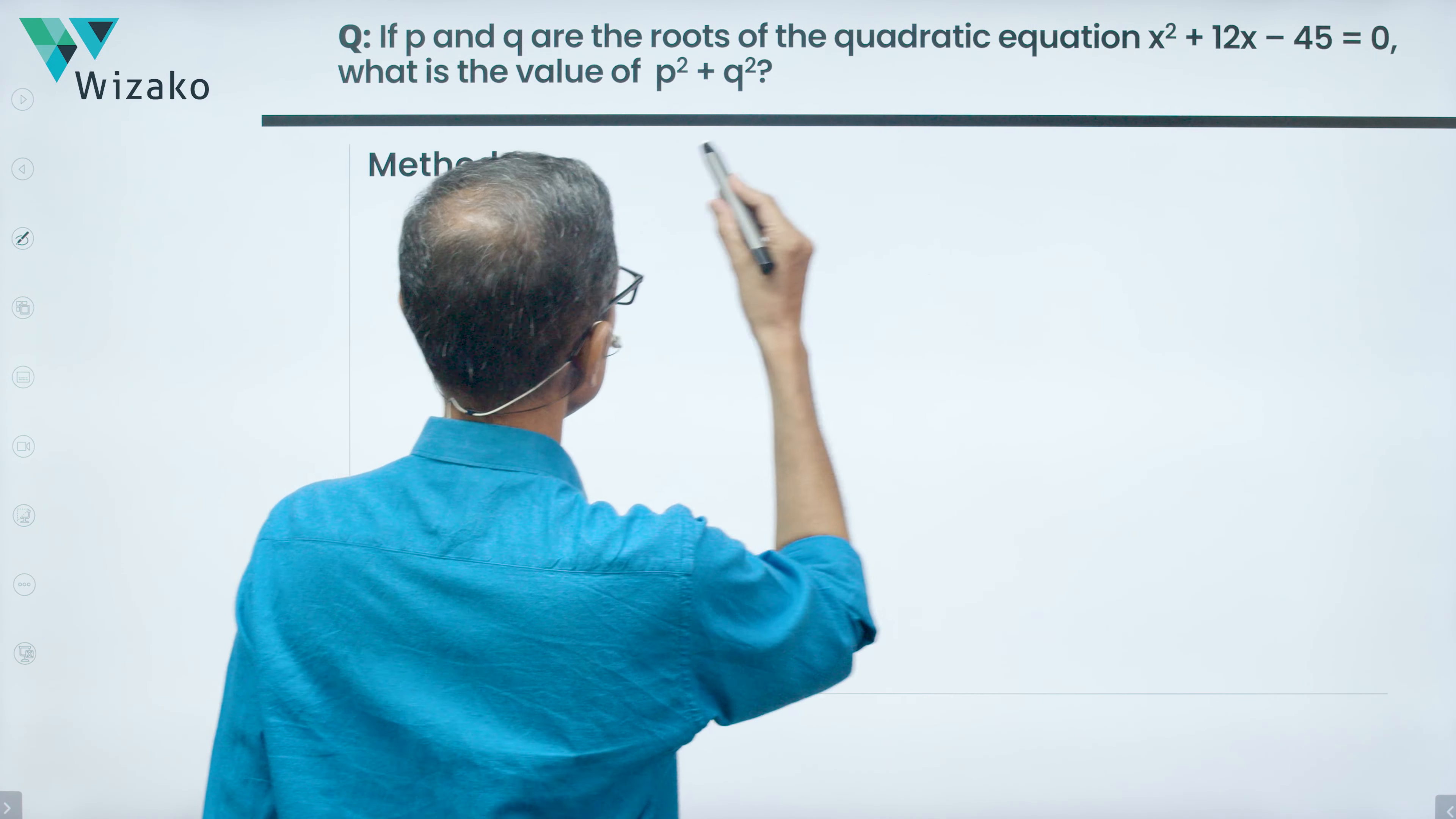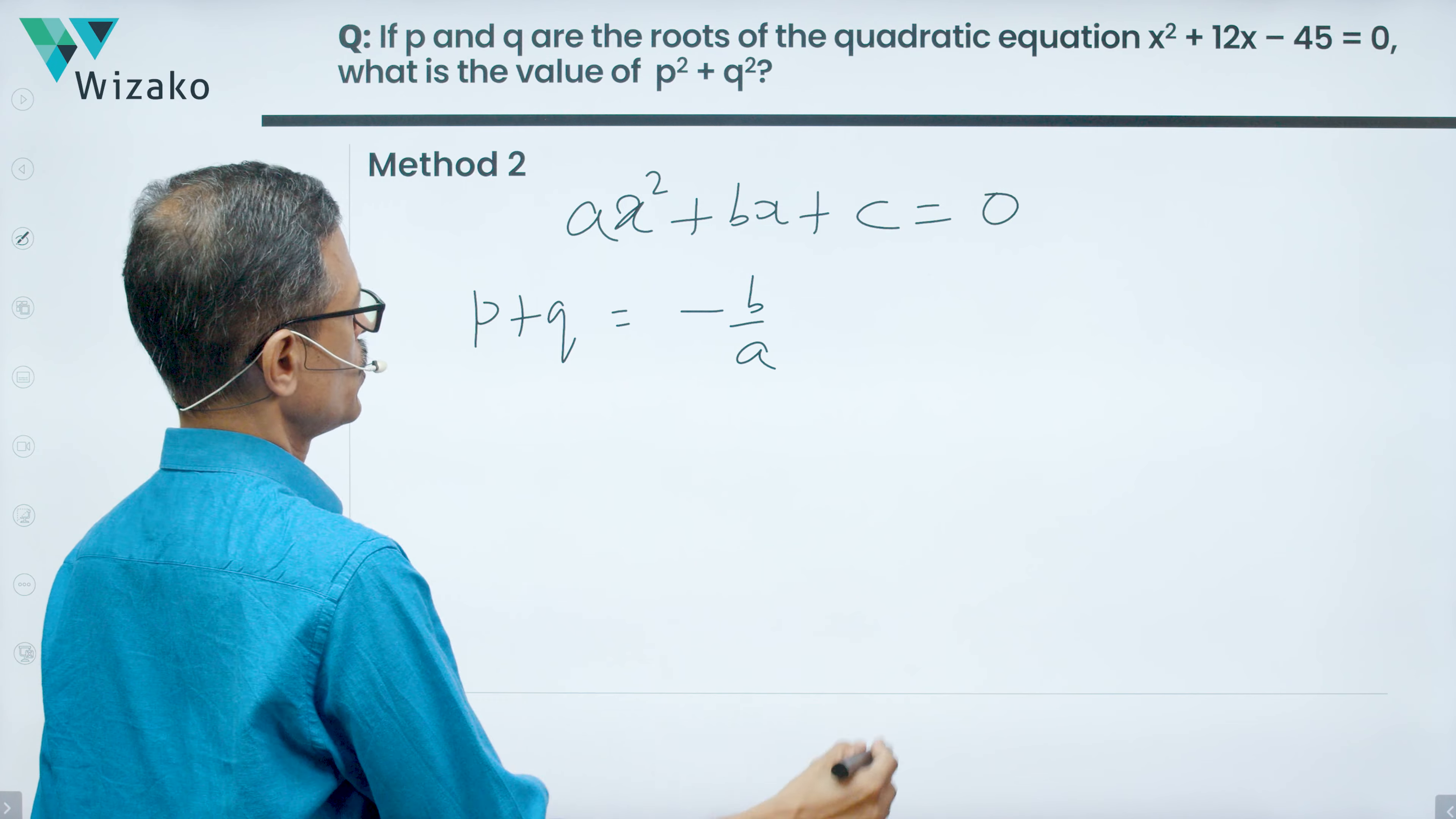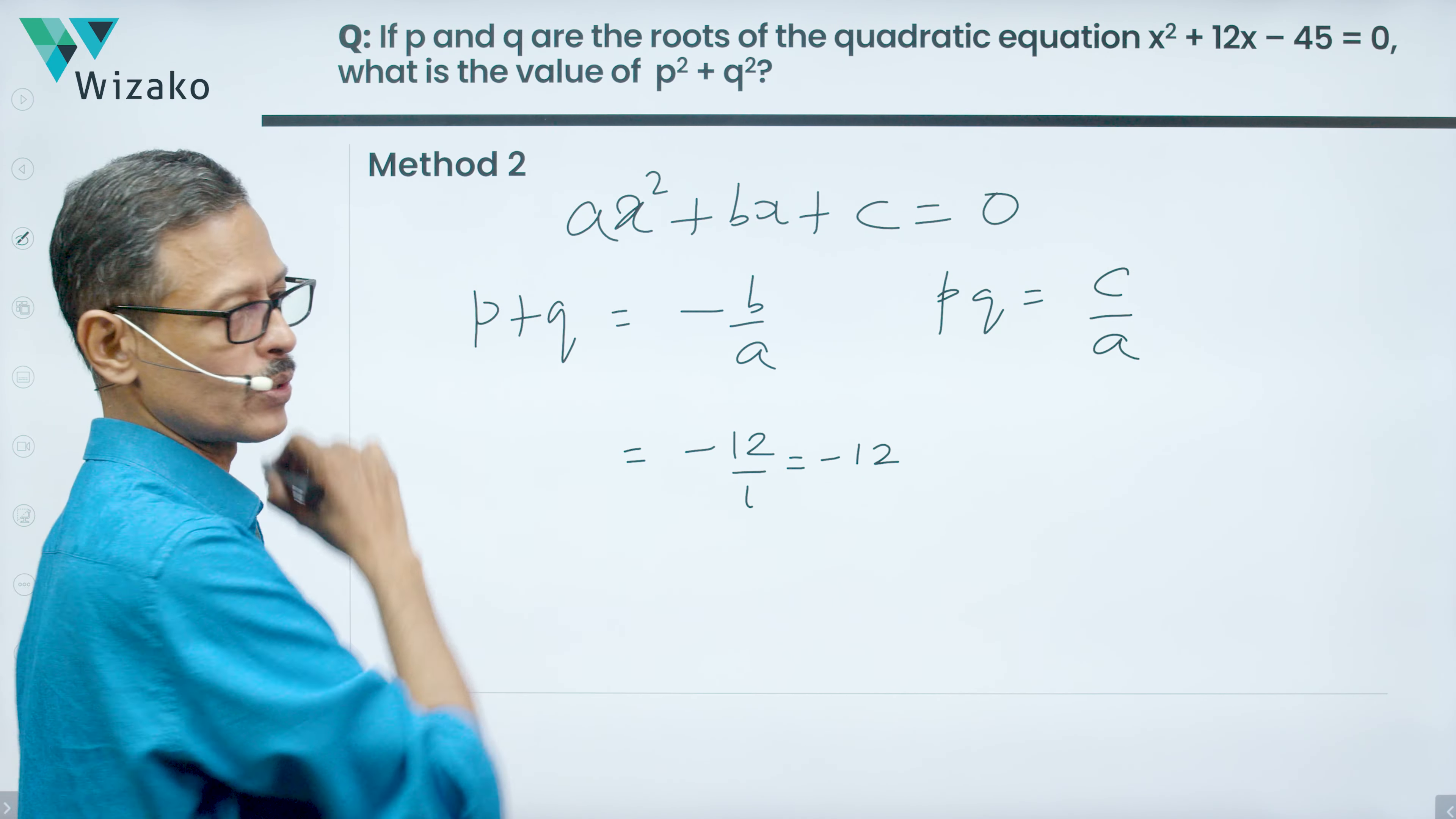We know that if x² + bx + c = 0 is a quadratic equation, sum of its roots, p + q in this case will be -b/a, known to us. pq, the product of the roots is equal to c/a, this also known to us. So sum of the roots for us is essentially x² + 12x, b is 12, a is 1, so it's going to be equal to -12/1 which is -12, sum of the roots.